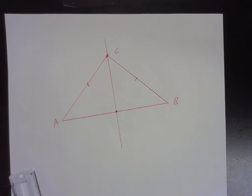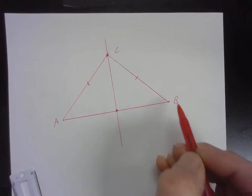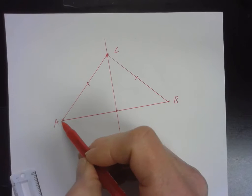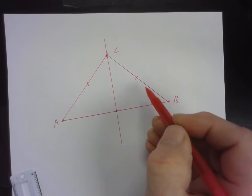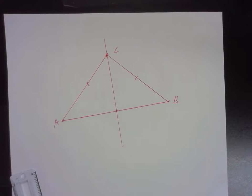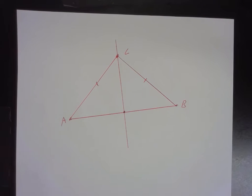So we have two theorems: first, in a plane, if a point lies on the perpendicular bisector, it's equidistant from the endpoints; and second, in a plane, if a point is equidistant from the endpoints of a segment, then it is on the perpendicular bisector. Remember when we first talked about the converse and the inverse? Just about every theorem we've covered also has a true converse. We did the proof already, so let's look at page 303.